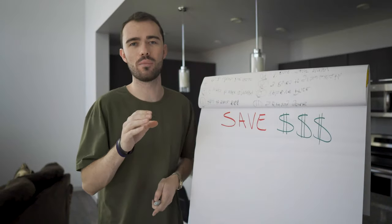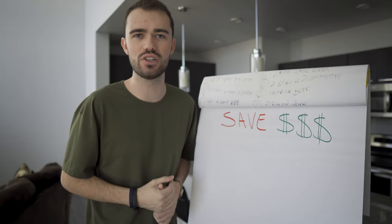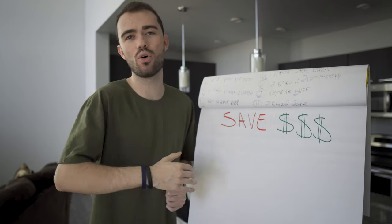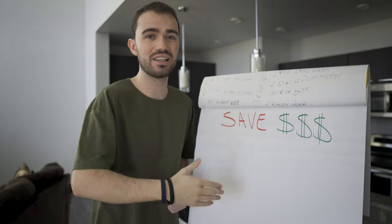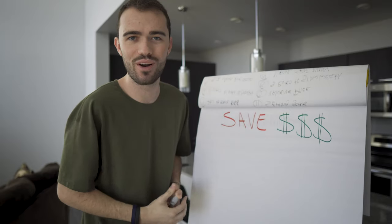According to smartasset.com, the average American has just over $9,000 in their checking account. That includes 18-year-olds all the way up to 80s, 90s, 100-year-olds. And in today's video, I'm going to give you a few steps to saving more money.